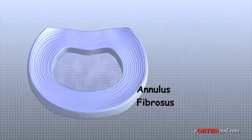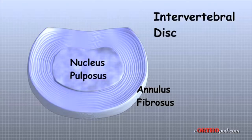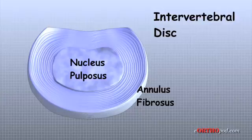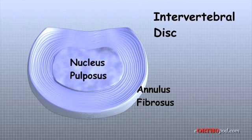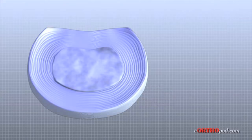The nucleus is surrounded by a series of strong ligamentous rings called the annulus fibrosus. Ligaments are made of strong connective tissue and connect one bone to another. The annulus fibrosus is actually a special ligament that connects two vertebrae together.